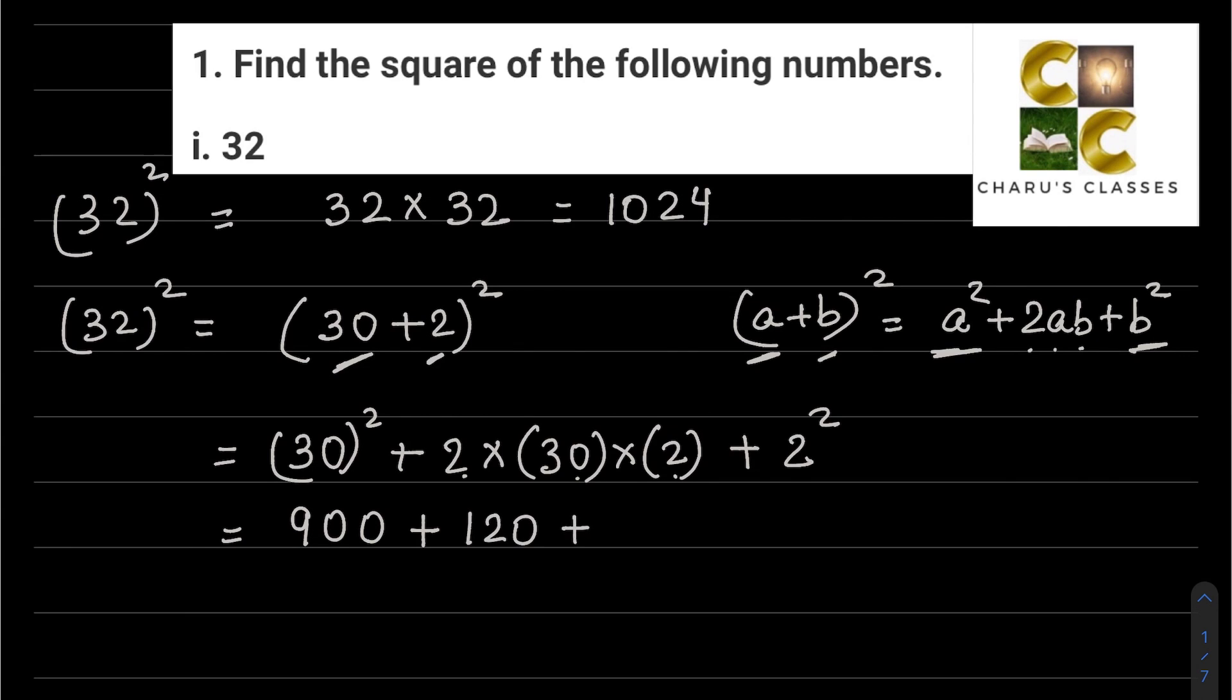And 2 squared means 2 into 2, which is 4. So this equals, if you add them - 900 plus 120 plus 4 - this is also coming as 1024. So you can solve it using either of these methods, whichever your teacher approves.